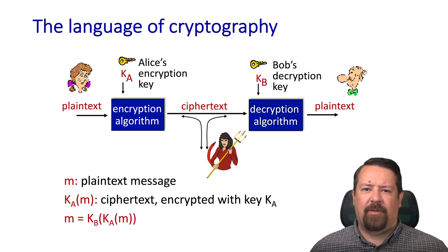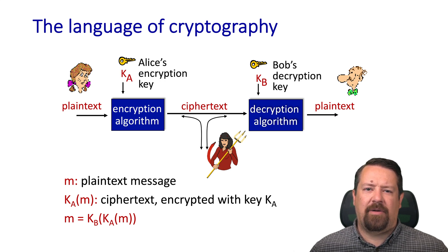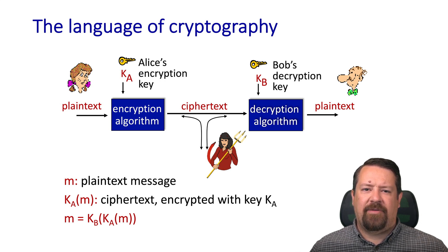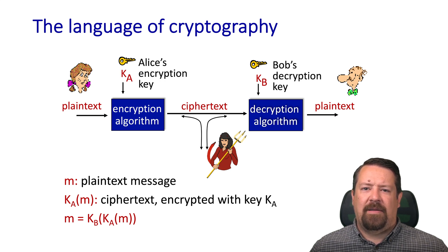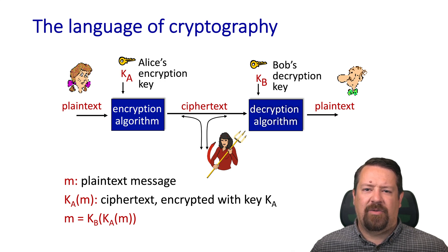Some common language will help us talk about these systems. Proceeding from left to right, we have our plaintext — the original data that makes sense to the user or to the program that created it. This is run through the encryption algorithm, which is also supplied with an encryption key. What is produced is the ciphertext, commonly represented as k-sub-a of m, meaning m has been encrypted using encryption key a. When the ciphertext reaches the decryption algorithm, the decryption key k-b is applied, and what is produced is the plaintext — the original plaintext message.